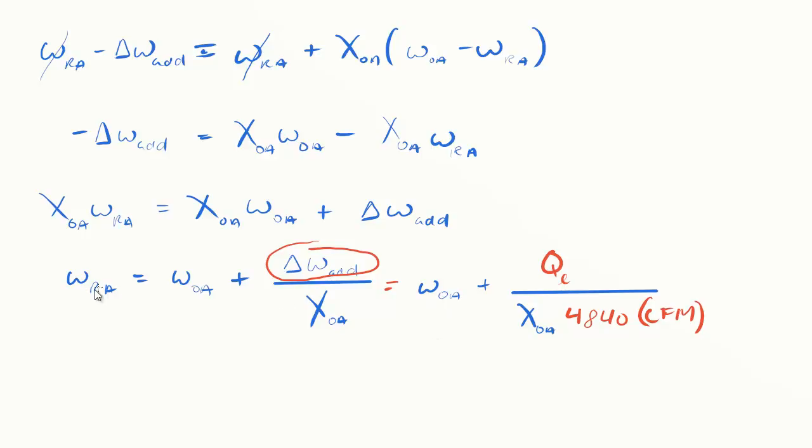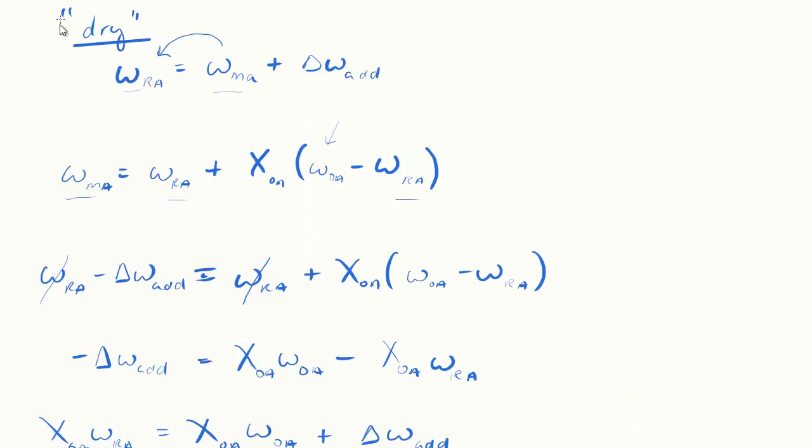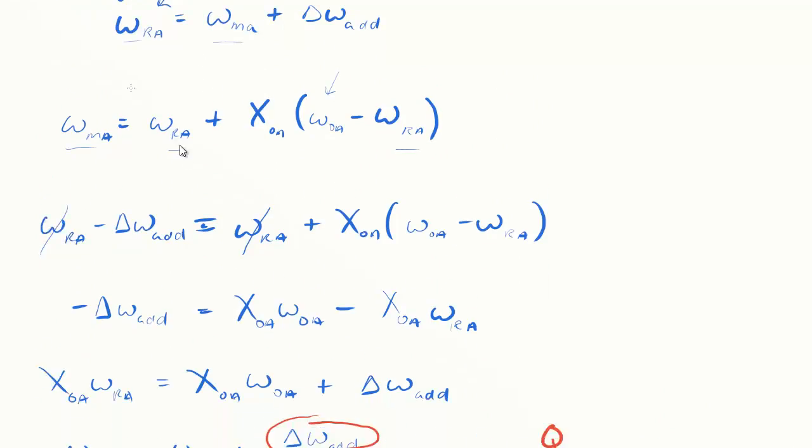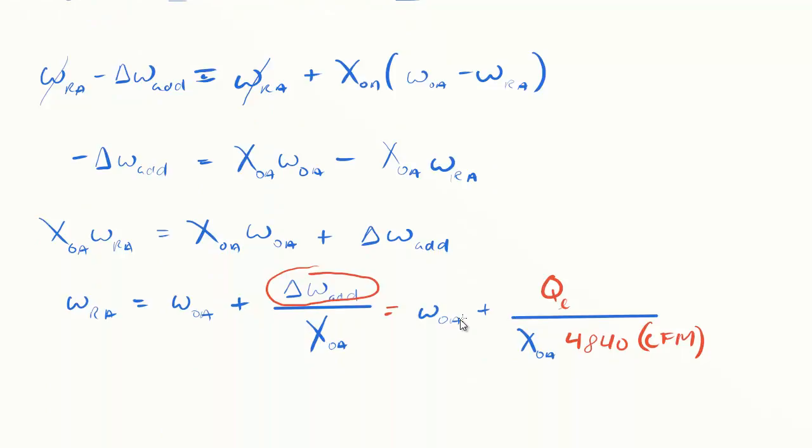If I take this term and put in what we had to start, that omega added was Q latent over 4840 times CFM. I would get omega_OA plus that Q latent divided by 4840 times CFM divided by X_OA. It's an interesting formula - our return air absolute humidity ratio in the dry condition simply adds this term to outdoor air humidity ratio. At no point do you see mixed air or supply air in here.